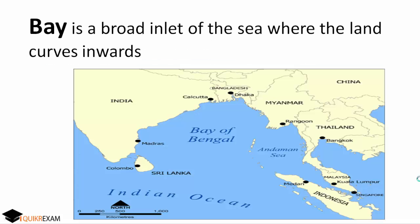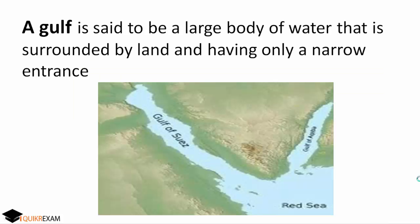Next, what is a Bay? A Bay is a broad inlet of the sea where the land curves inward. As shown in this picture of the Bay of Bengal, the land comes inward to form the bay.